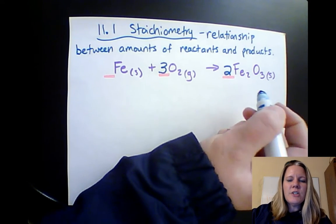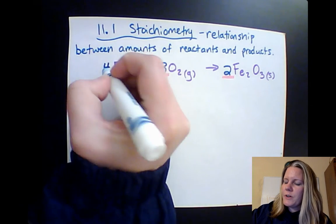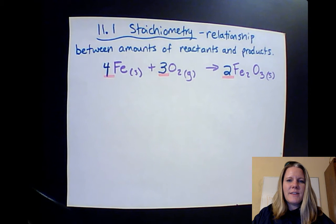Now by doing that, I just made four irons on the right. So I'm going to need a four here to have four irons on the left.